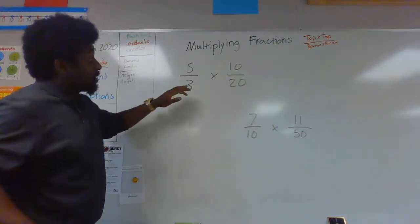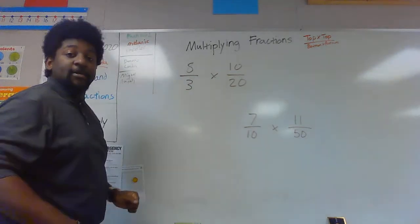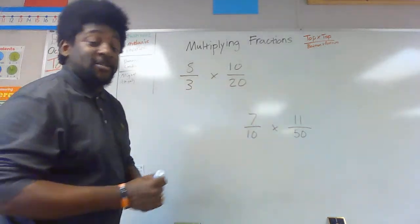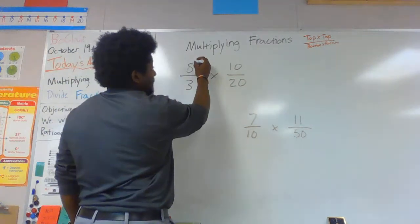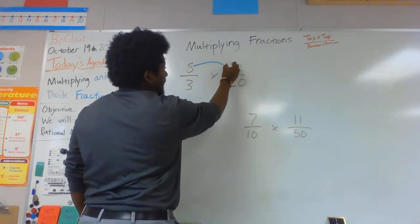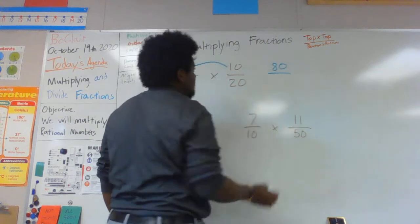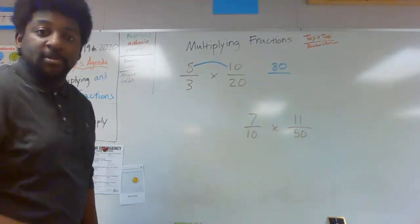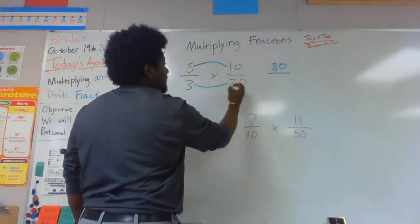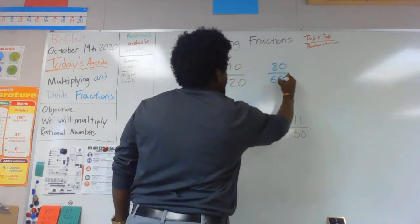It's as easy as it sounds, you guys. Watch. My top or my numerator is 8. 8 times 10 is 80. That's the numerator of my answer. 3 times 20 is 60.